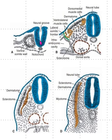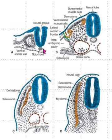This neural plate, or thickening of the ectoderm, forms a neural groove and two neural folds. Soon it separates from the surface ectoderm, so the neural tube detaches from the surface ectoderm. When the neural tube starts to form due to the induction of the notochord, at that time the somite also starts to form.